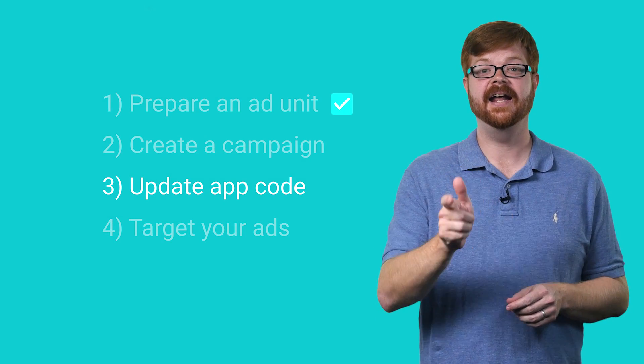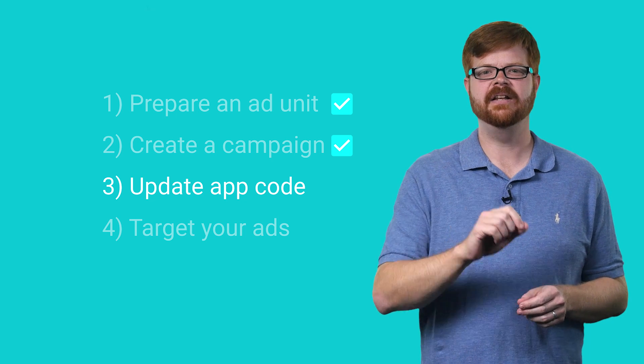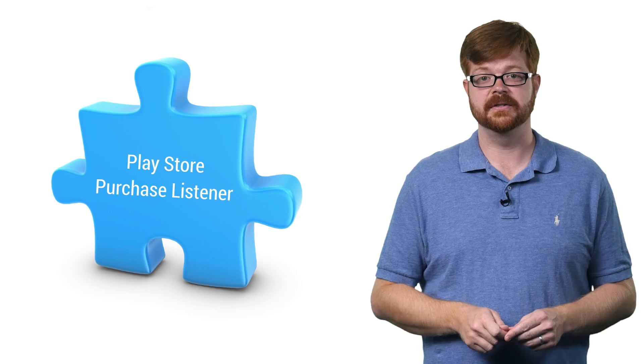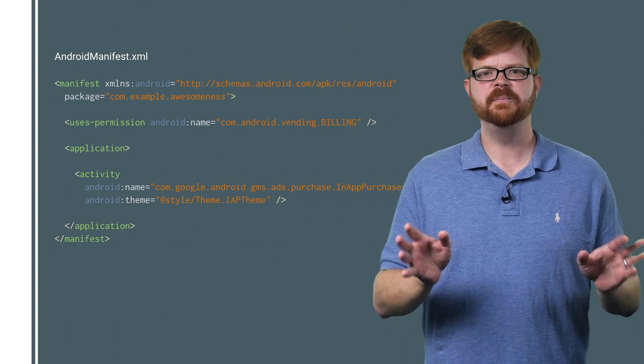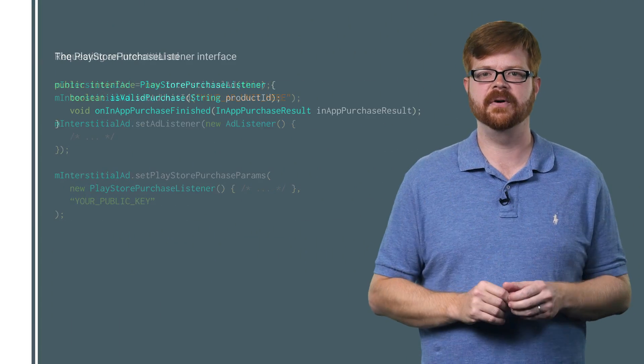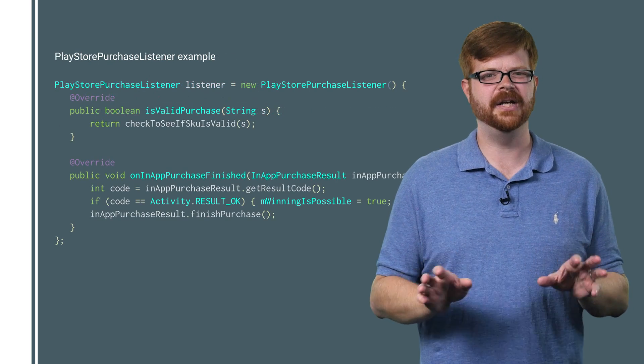So we've covered ad units and how to create house ad campaigns. Now let's talk about how to update your app so it's ready to display these new ads. When your app requests an ad and knows that it could receive an in-app purchase house ad, it needs to give the SDK a Play Store purchase listener. This listener interface defines two methods that the SDK uses to verify in-app products and process purchases.